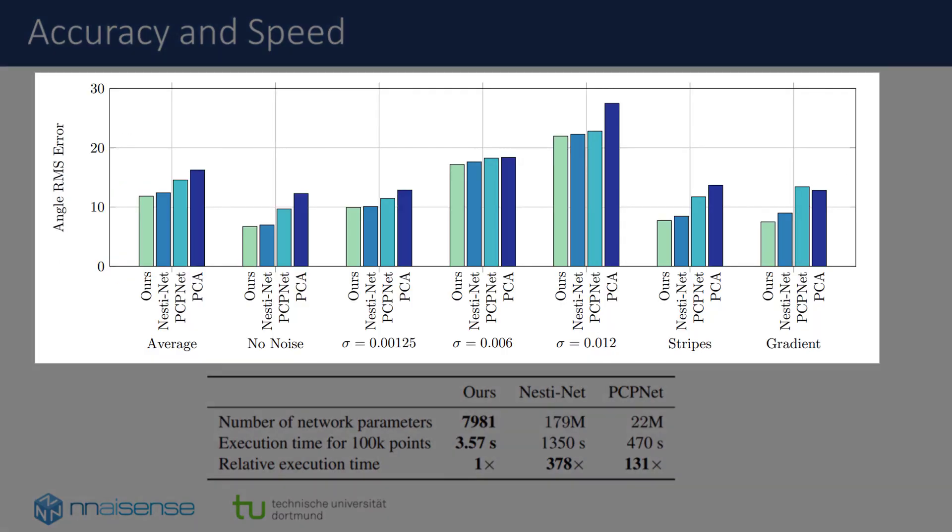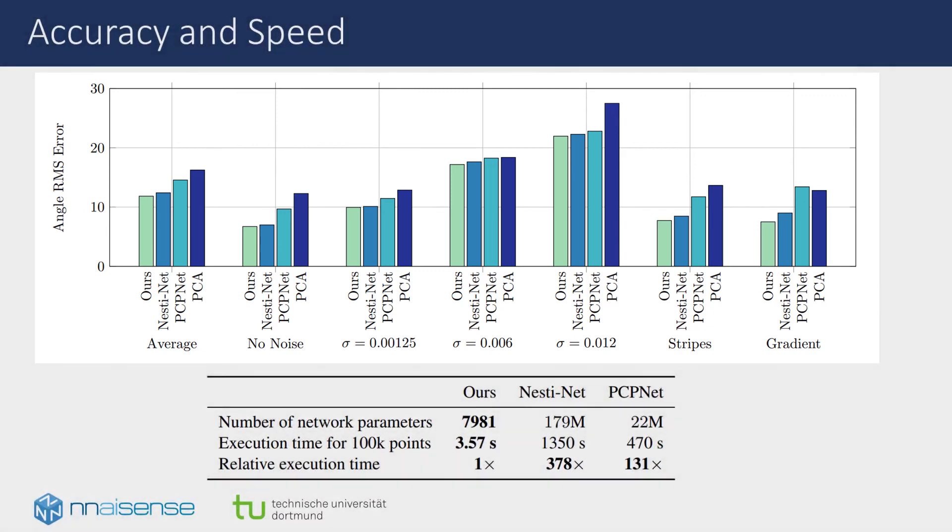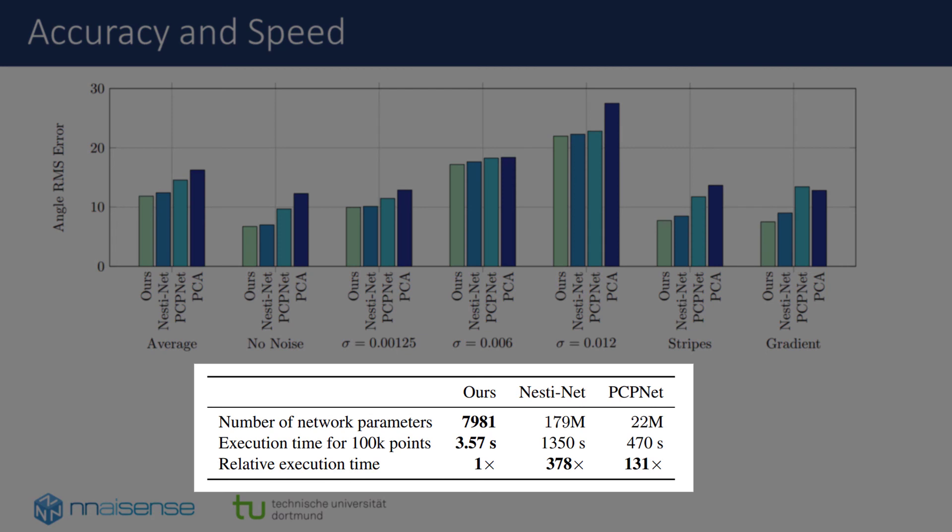We evaluated our method on the PCP-NET benchmark dataset, consisting of a variety of point clouds with different levels of noise and density variations. We can show that our approach slightly improves on the state of the art in normal vector accuracy in all categories, as can be seen in the plot. The biggest gain, however, we achieve in efficiency.